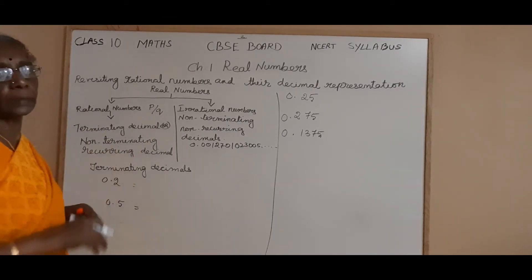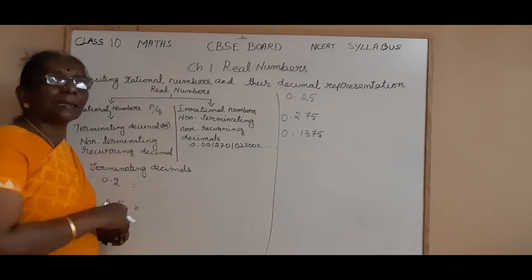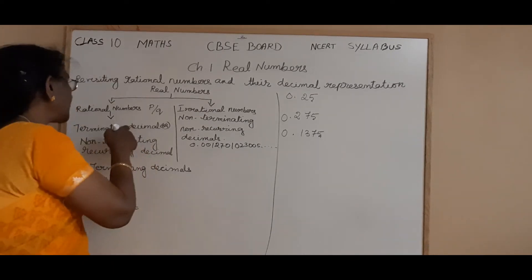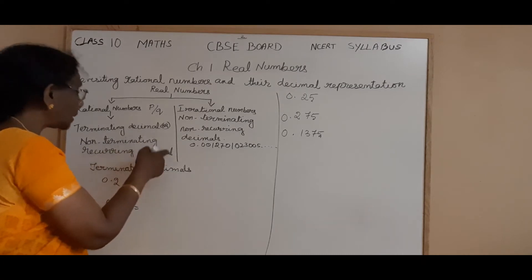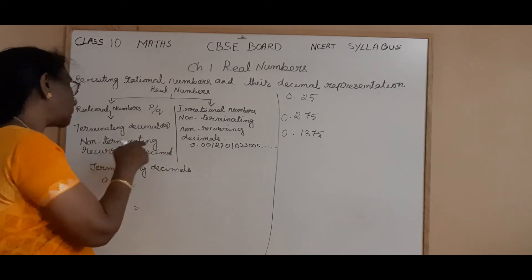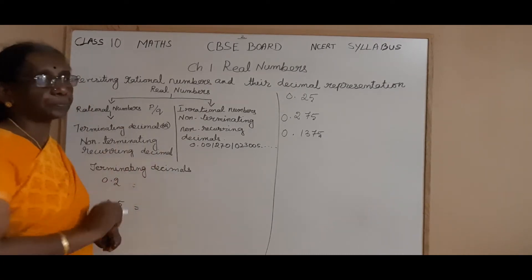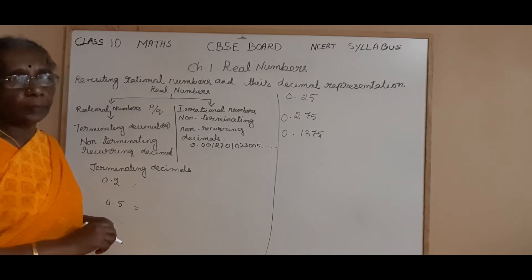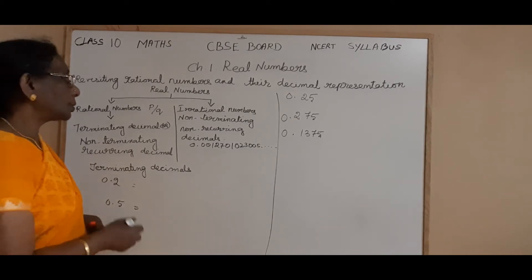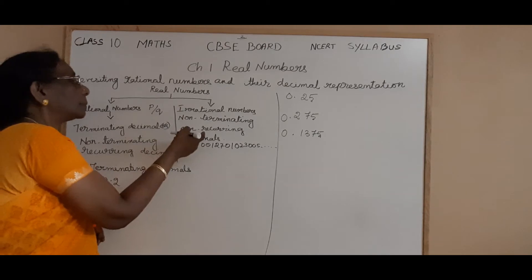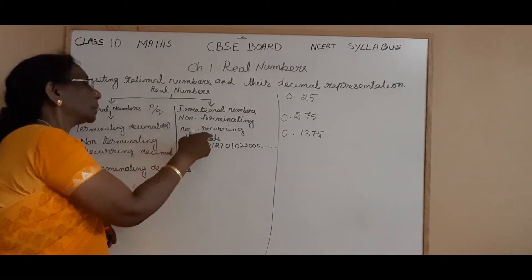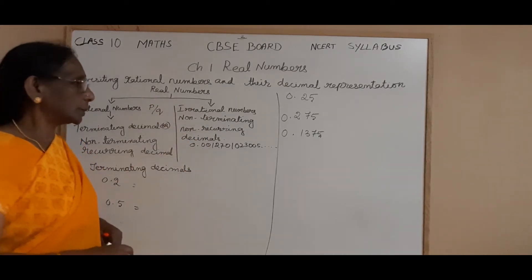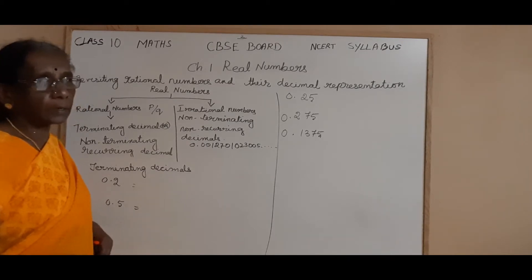Now the decimal representation: we take the decimal representation of rational numbers — two types. It may be terminating, or it may be non-terminating recurring decimal. And irrational numbers — it will be non-terminating, non-recurring decimal.